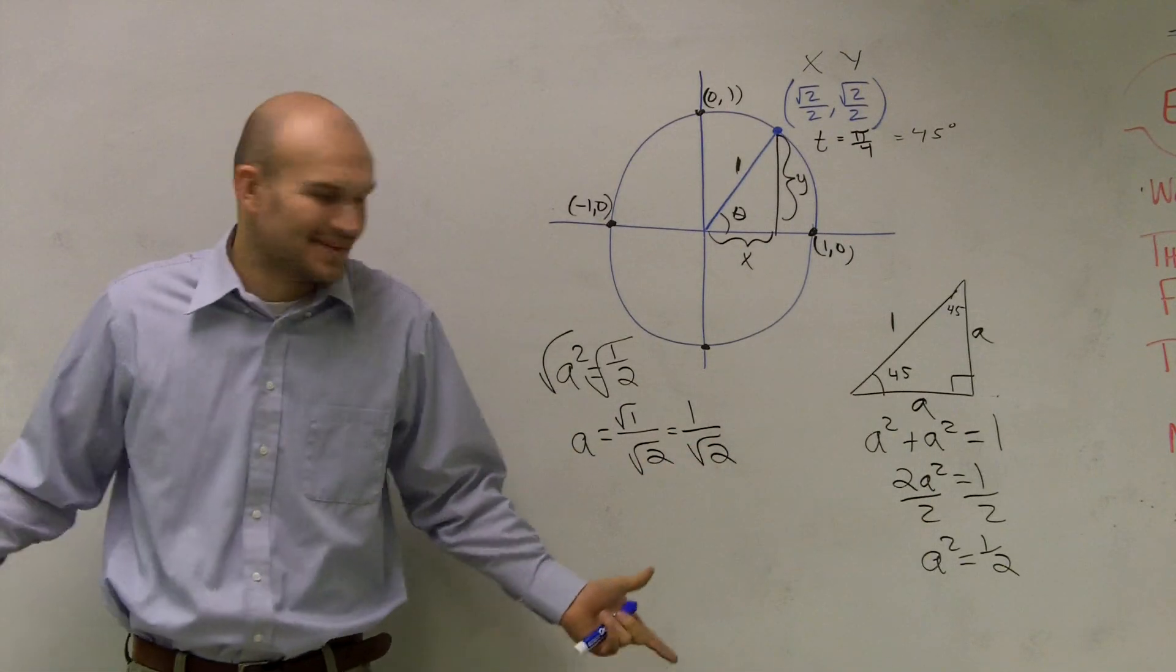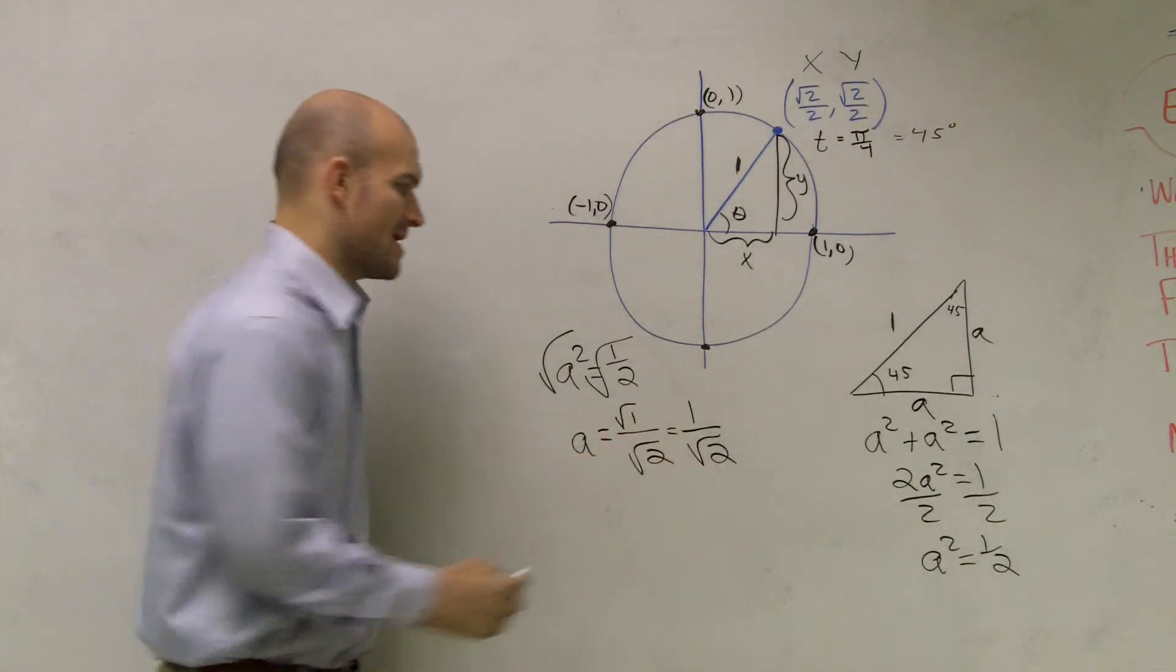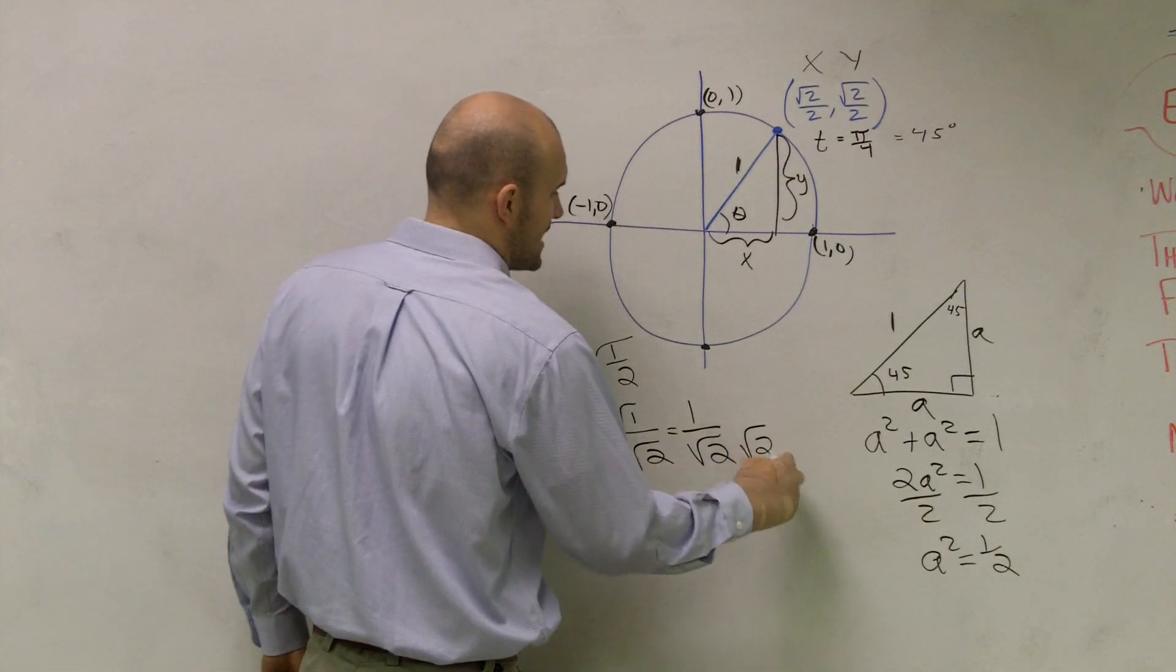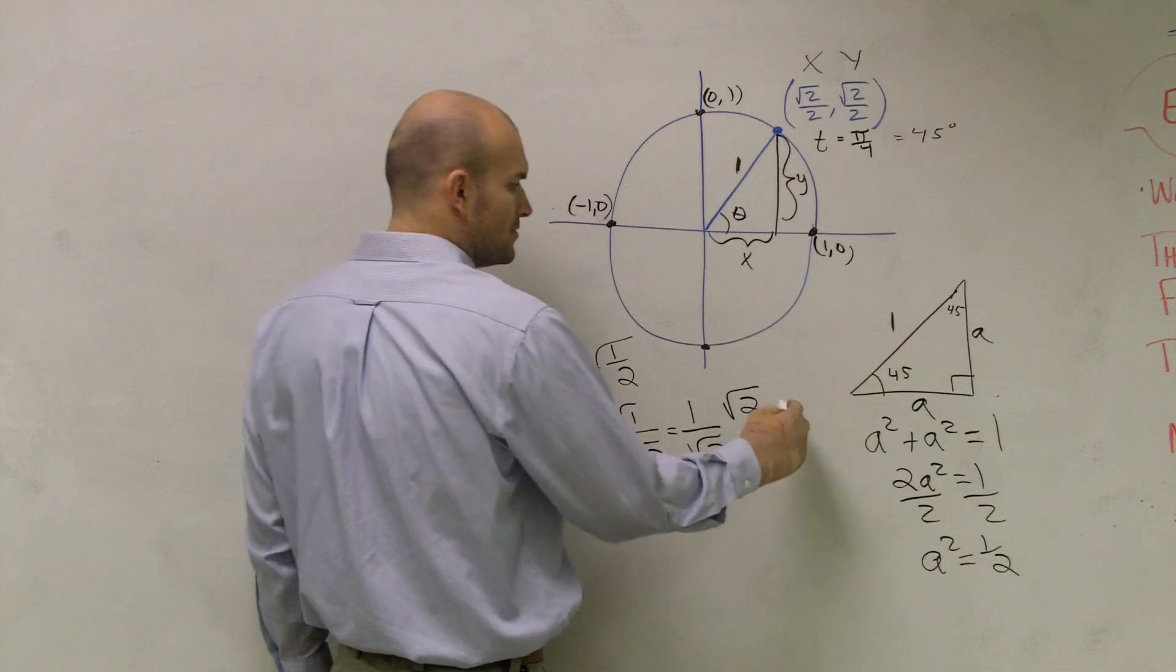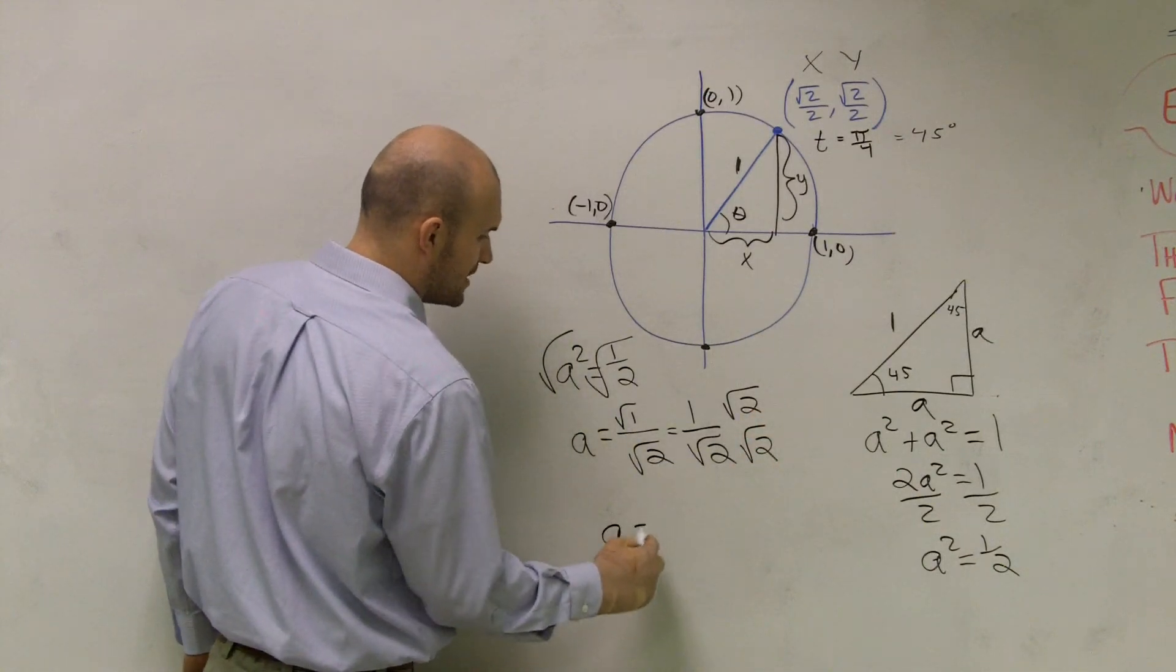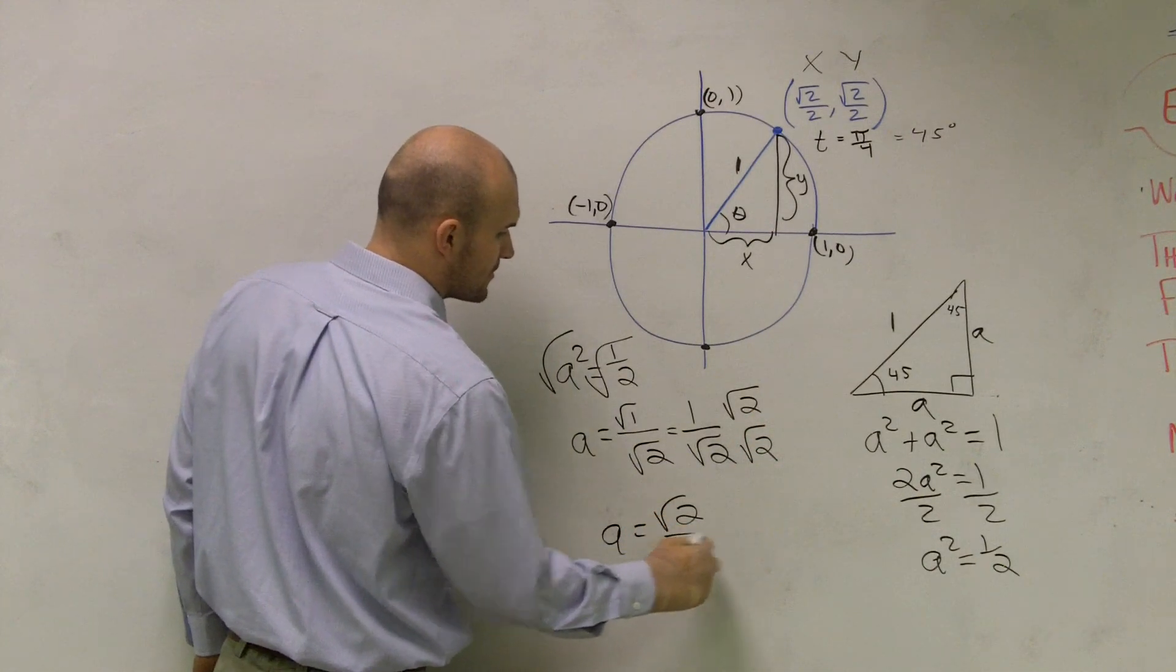Now I have a radical on the bottom. I have to get rid of that radical, so I'm going to rationalize the denominator. Therefore, 1 times the square root of 2 is going to give me A equals radical 2 over 2.